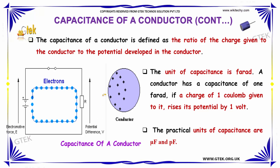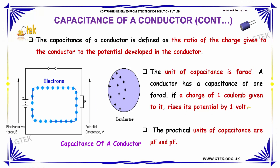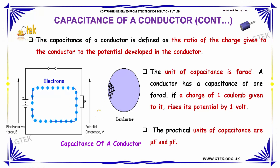In general, the unit of capacitance is mentioned as Farad. A conductor has a capacitance of 1 Farad if a charge of 1 Coulomb given to it raises its potential by 1 Volt. The practical units of capacitance are µF and pF.